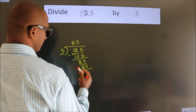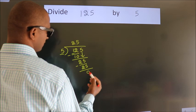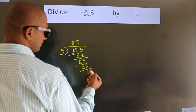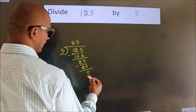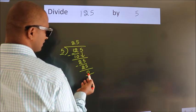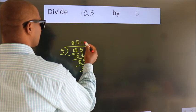Now we subtract. We get 0. After this, no more numbers to bring it down. And we got remainder 0. So this is our quotient.